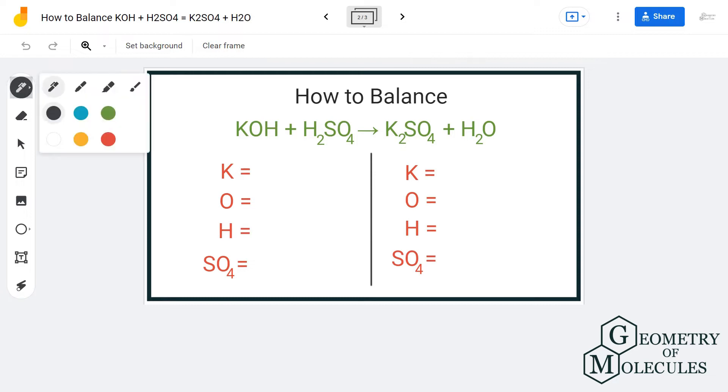So I have one potassium atom on the reactant side, two potassium atoms on the product side. For oxygen, I have one atom of oxygen. For hydrogen, we have two atoms of hydrogen, and on the product side we also have two atoms of hydrogen. SO4 group, we have one on each side.